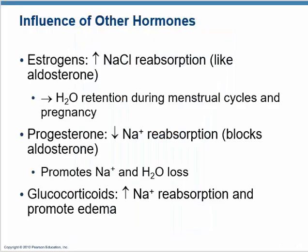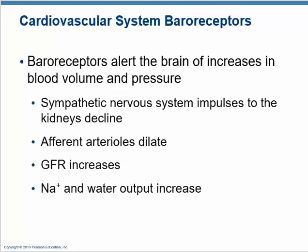Other hormones also affect sodium balance. Estrogen increases sodium reabsorption similarly to aldosterone — which is why water is retained during certain parts of the menstrual cycle and during pregnancy. Progesterone blocks sodium reabsorption by blocking aldosterone, working against estrogen. Glucocorticoids such as cortisone increase sodium reabsorption, which is why stress causes high blood pressure.